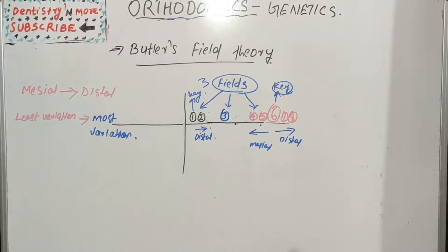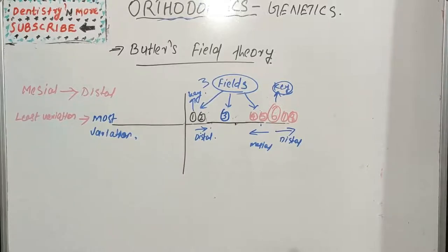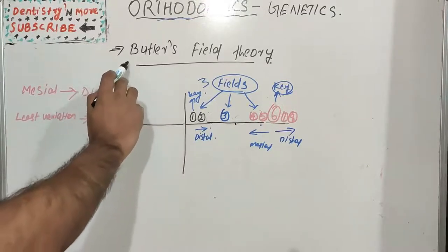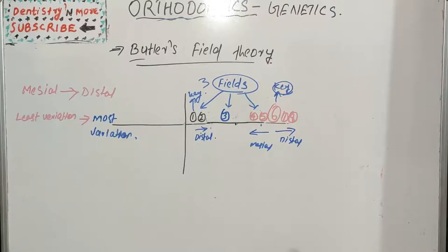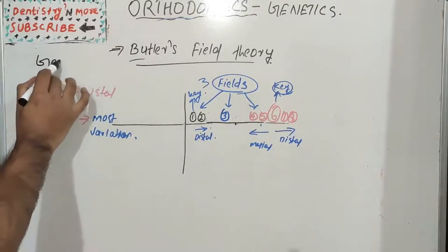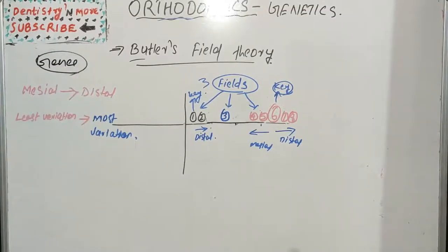Hello everyone, welcome back to another session in dentistry. Today we have a genetical theory in orthodontics — Butler's Field Theory. As we all know, everything in our body, the growth and pattern of growth, is determined by genes, not completely but to an extent. Genes have a very significant role in determining the pattern and growth of various bones and other supporting structures.